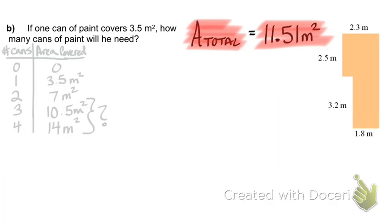Since for every can of paint we added, we added 3.5 meters, you can see that 3.5 is definitely an important number here.